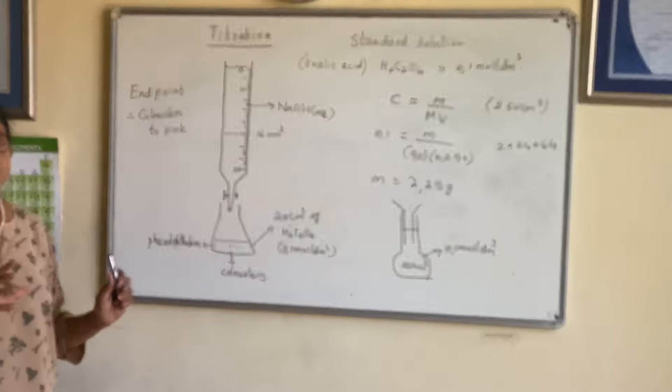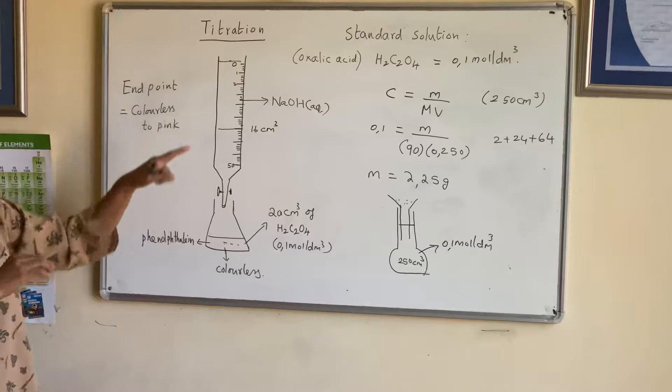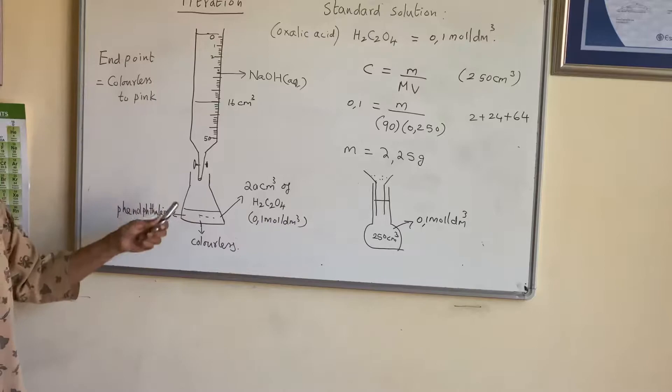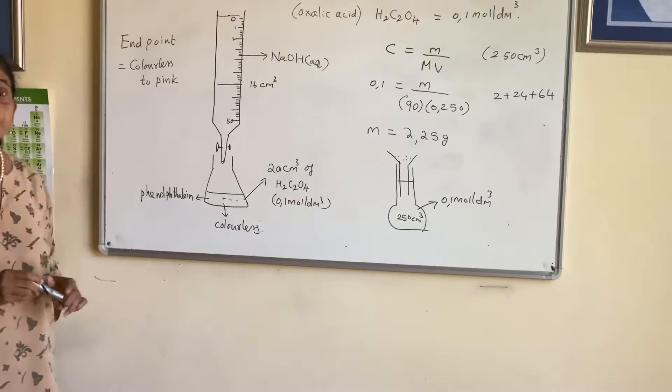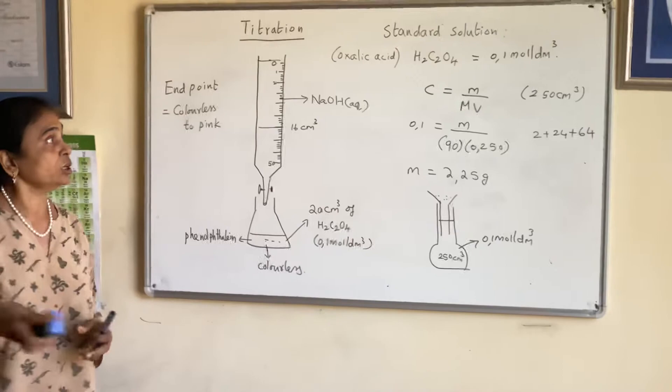The first time you may make one or two mistakes and not reach the correct point. Now you know the volume is going to be around 16 cm³. Refill the burette to zero and start the titration again carefully. When nearing 15 cm³, add drop by drop to find the exact point where the color changes. Repeat the process three times, find the average, and use it for calculations.